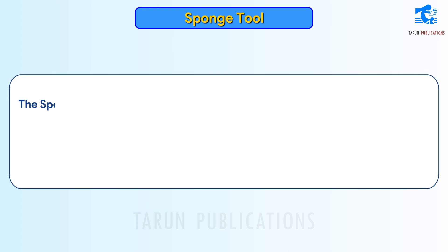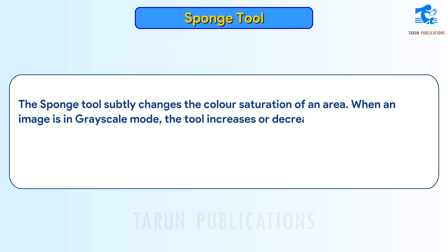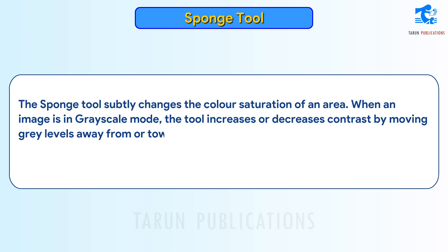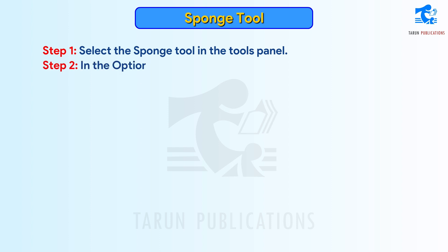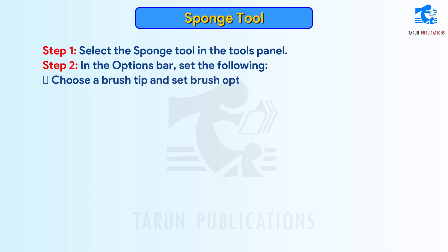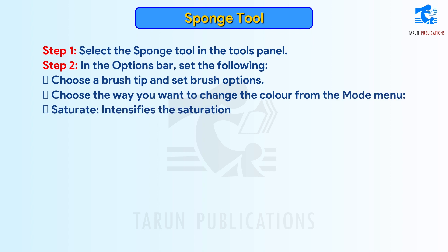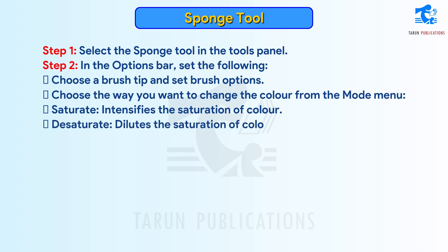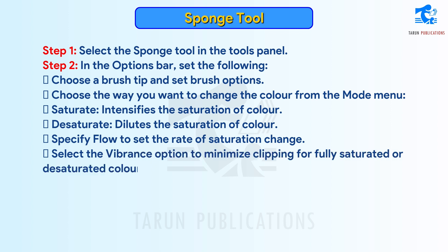Sponge Tool subtly changes the color saturation of an area. When an image is in grayscale mode, the tool increases or decreases contrast by moving gray levels away from or toward the middle gray. Follow these steps. Step 1: Select the Sponge Tool in the Tools panel. Step 2: In the Options bar — choose a brush tip and set brush options; choose the way you want to change the color from the Mode menu (Saturate intensifies the saturation of color; Desaturate dilutes the saturation of color); specify flow to set the rate of saturation change; select the Vibrance option to minimize clipping for fully saturated or desaturated colors. Step 3: Drag over the part of the image you want to modify.